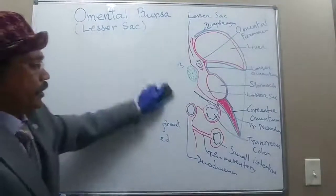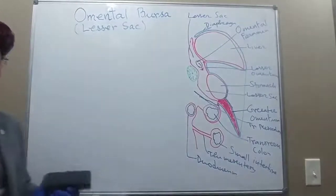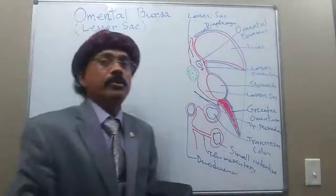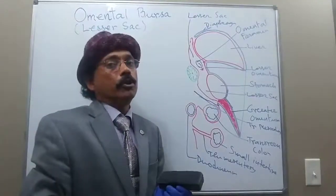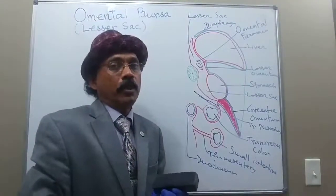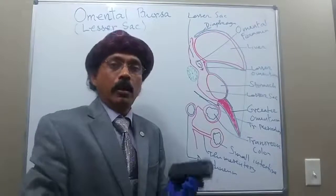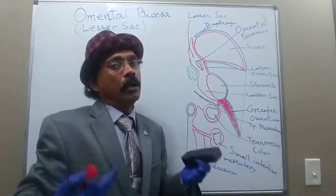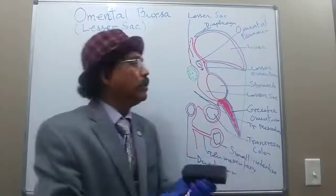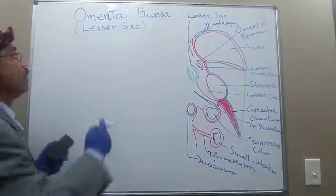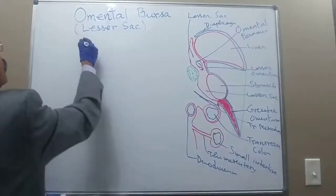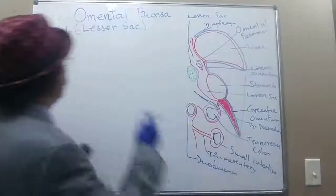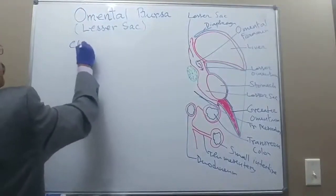It is formed due to the expansion of the dorsal mesentery, rotation of the stomach, and the differential or enormous growth of the liver and the spleen. Now we will go to the clinical anatomy.